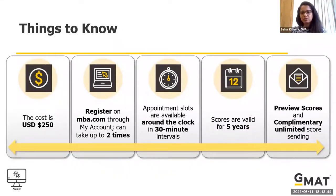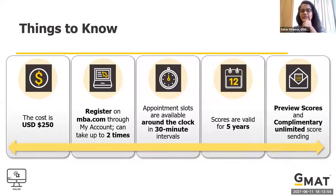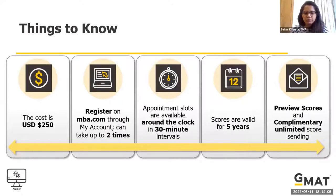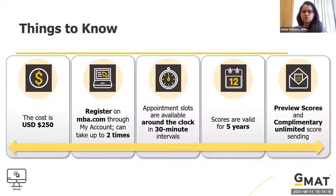The enhanced online GMAT is a $250 test — you register on mba.com and slots are available every 30 minutes, so slot availability is not a problem. For the test center version you need to book slots much further in advance. Because of COVID, about 50 to 55 percent of test centers are currently closed, so check mba.com/find-a-seat to see whether the test center near you is open.